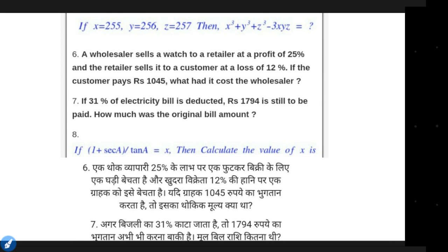If x is equal to 255, y is equal to 256, and z is equal to 257, then x³ plus y³ plus z³ minus 3xyz is equal to what? So in this question, you have been given x value, y value, z value, and you have to find x³ plus y³ plus z³ minus 3xyz. First of all, you need to know this formula.